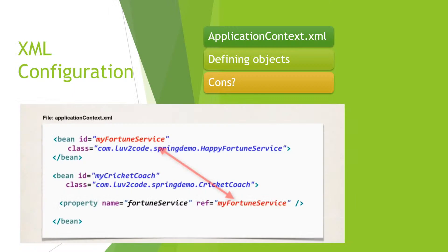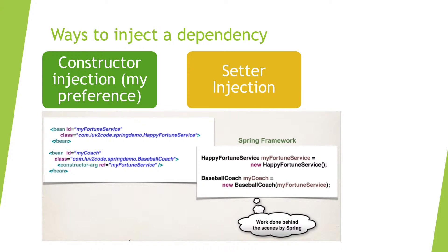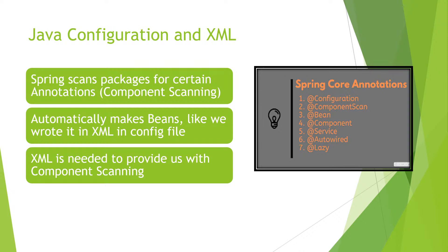First you define the dependency, and then later you inject it — through a constructor. There are two ways to inject a dependency — actually three, but I'm just going to mention two. The first one is constructor injection, the one I just showed you. A constructor argument of a fortune service is injected in our coach class. Spring framework, behind the scenes, makes a HappyFortuneService and then a BaseballCoach with that fortune service injected through a constructor — something that our coach depends on.